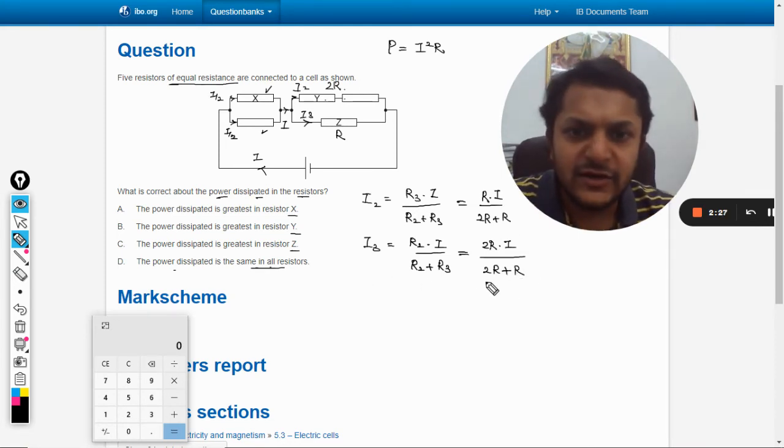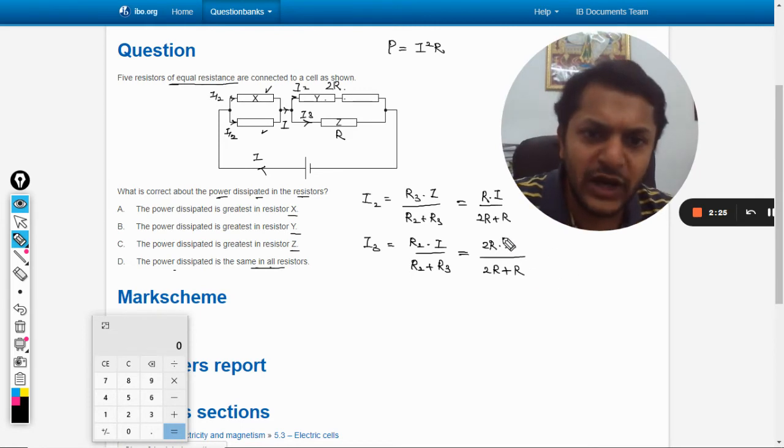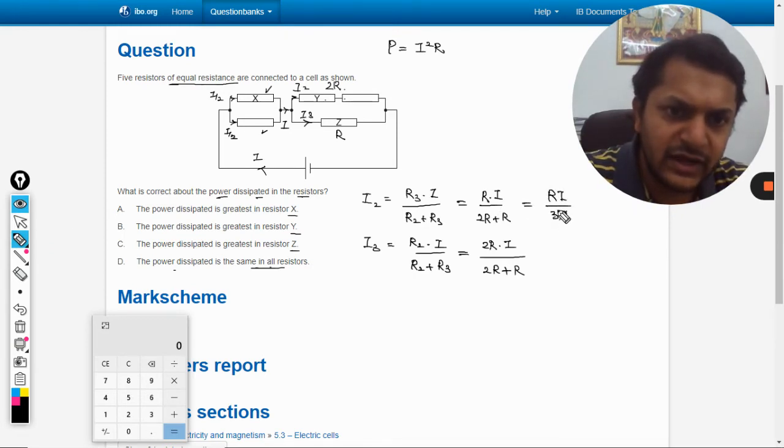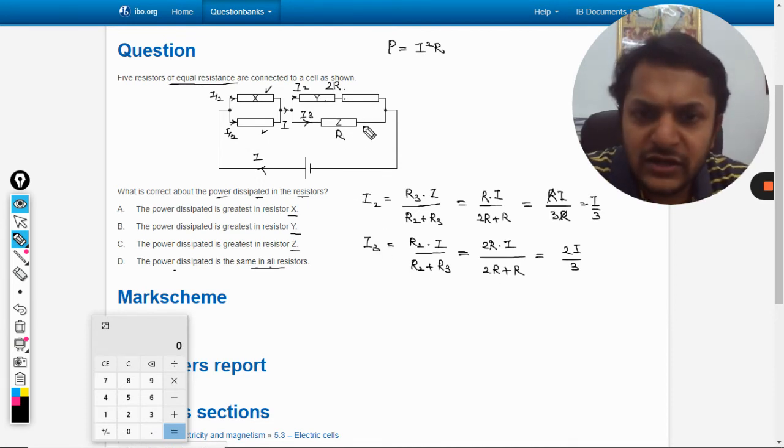So we can see what will be the value of i2 and what will be the value of i3. So i2 will be Ri divided by 3R, so it is going to be i by 3. And this is going to be 2i by 3, i3. So here the current is 2i by 3 and in this branch the current is i by 3.